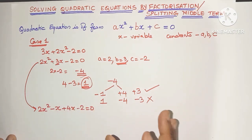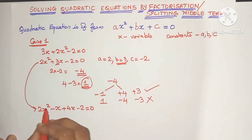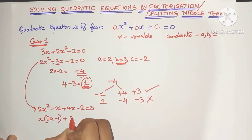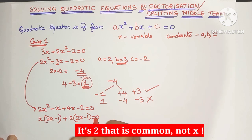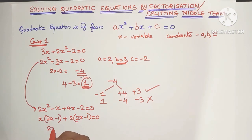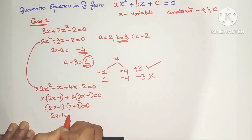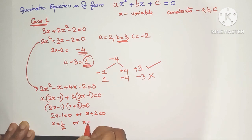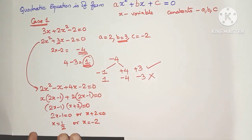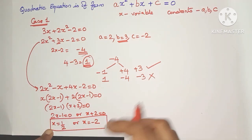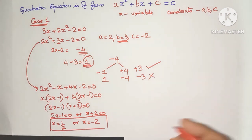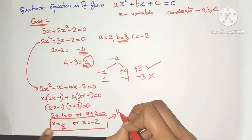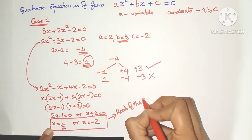Now we take out whatever can be taken out as common. Here it is x, giving 2x minus 1, plus 4 giving 2x minus 1, equal to 0. Taking 2x minus 1 as common, this means either 2x minus 1 equals 0 or x plus 2 equals 0. So x equals one half or x equals minus 2. These values of x are also known as the roots of the quadratic equation.